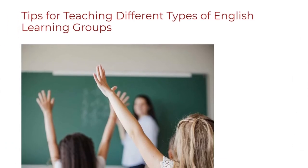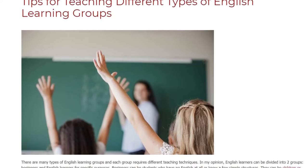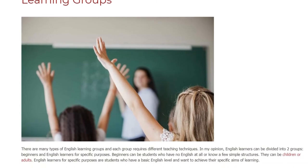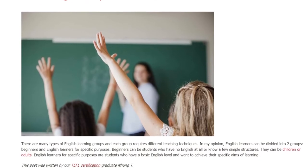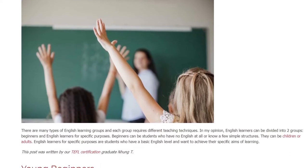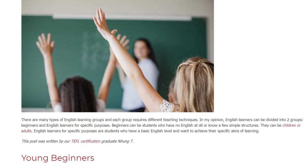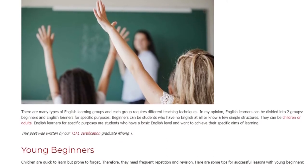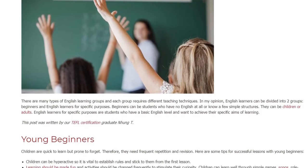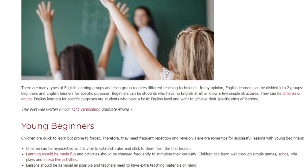Tips for Teaching Different Types of English Learning Groups. There are many types of English learning groups and each group requires different teaching techniques. English learners can be divided into two groups: beginners and English learners for specific purposes. Beginners can be students who have no English at all or know a few simple structures — they can be children or adults. English learners for specific purposes are students who have a basic English level and want to achieve their specific aims of learning.